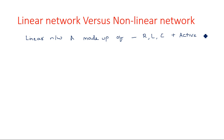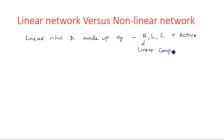Along with these linear components, one active source is needed to give energy to the circuit so that it can operate with a signal. An active source is nothing but either a voltage source or a current source, in order to pass current through these components. So a linear network is made up of completely pure linear components operated with the help of an active source.